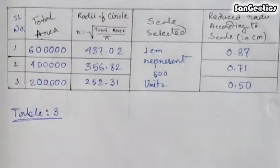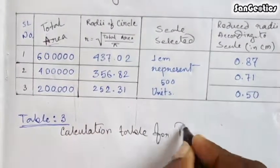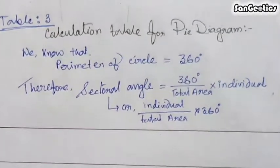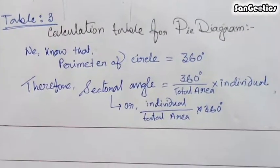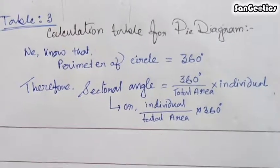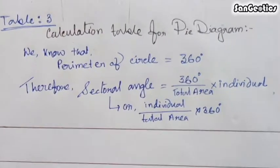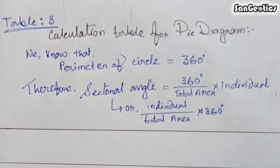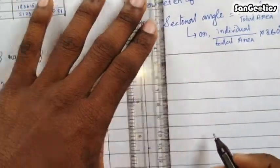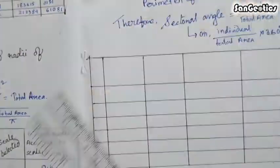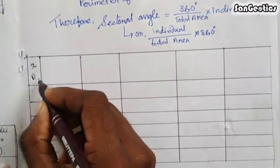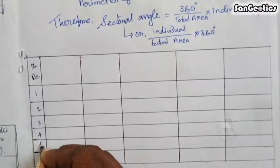Table 3 is the calculation table for the pi diagram. We know that the perimeter of a circle equals 360 degrees, therefore the sectoral angle equals (individual area / total area) × 360 degrees. We need to construct the table with captions: serial numbers one through six.